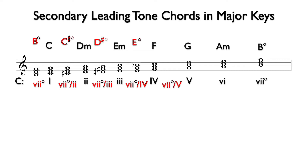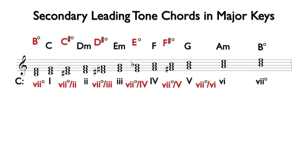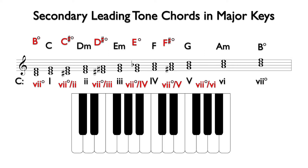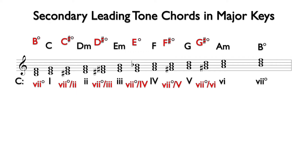Next, we will find the seven diminished of five. We find the seven diminished chord in the key of G, which is a minor second below G. This is F sharp diminished, and the notes are F sharp, A, and C. Next, we will find the seven diminished of six. We find the seven diminished chord in the key of A, which is a minor second below A. This is G sharp diminished, and the notes are G sharp, B, and D.